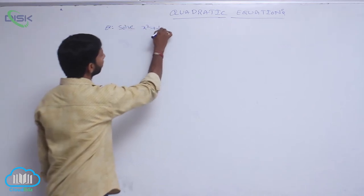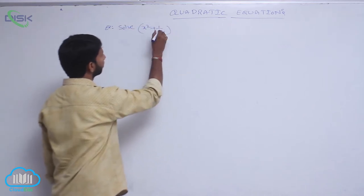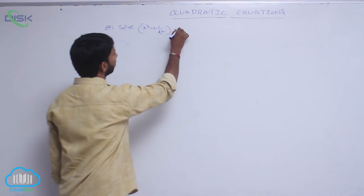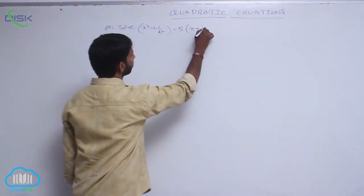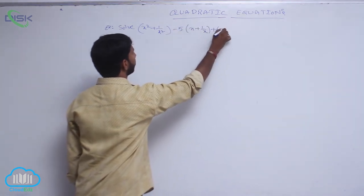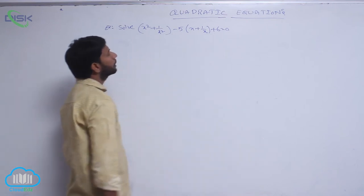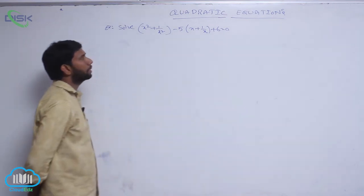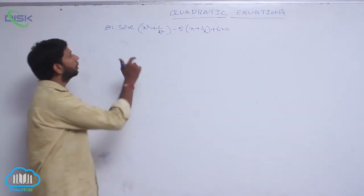Solve x squared plus 1 by x squared minus 5 of x plus 1 by x plus 4 equal to 0.